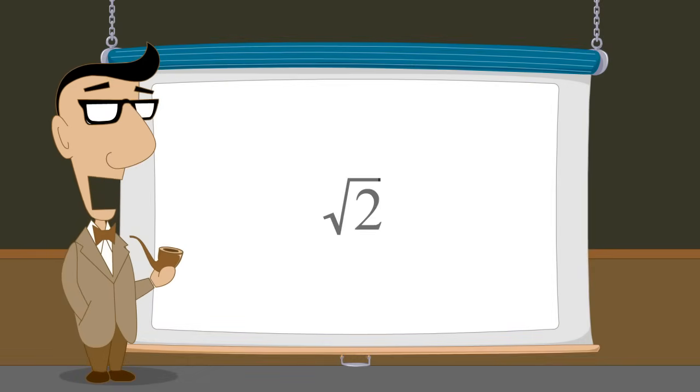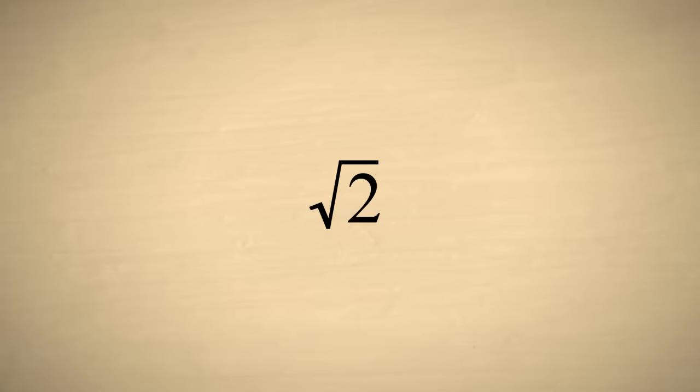The proof of the existence of irrational numbers may have gone something like this. If rational numbers can represent any quantity, then they should be able to represent square roots.